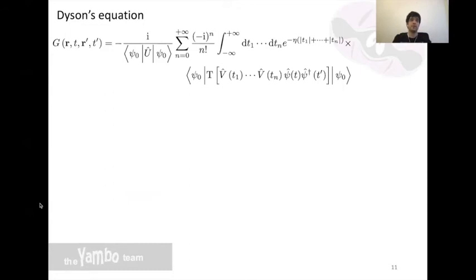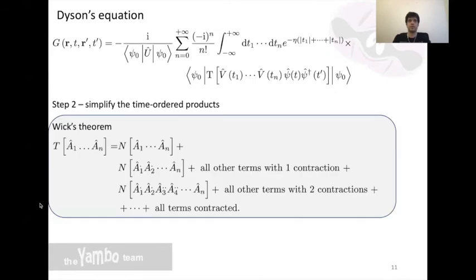By doing so, we arrive at this expression for the Green's function. We see that we are already at a perturbation-like expression with a sum over several terms with different numbers of interactions. But this expression can be further simplified to use only the potential and the single particle Green's function. We do this by employing Wick's theorem.